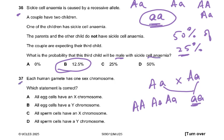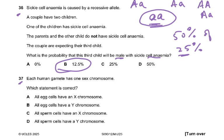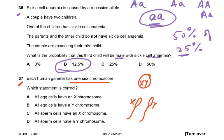Question 37: each human gamete has one sex chromosome. Which statement is correct? All sperm cells cannot all be X, because the male is XY — there are two types of sperm, one carrying X and one carrying Y. The female is XX, so all egg cells always carry an X chromosome. Therefore the answer is A: all egg cells have an X chromosome.